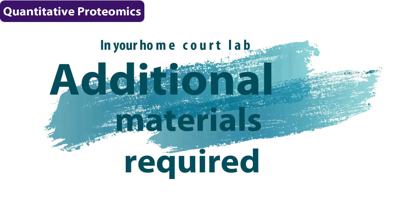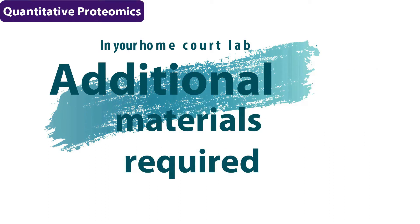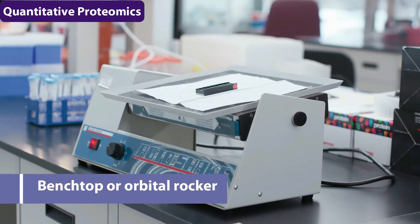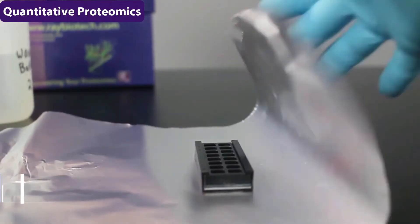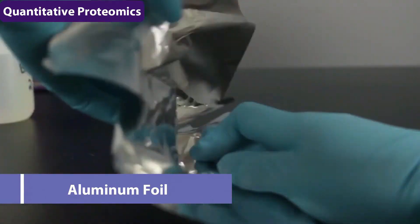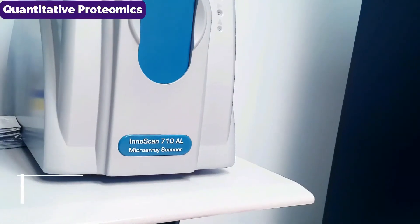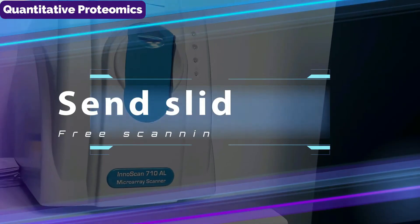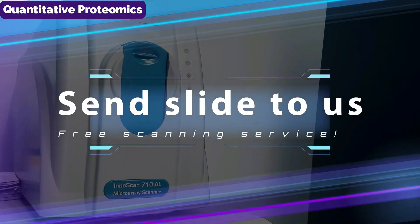In your home court lab, there are a few additional materials that you will need. These include a bench top orbital shaker or rocker, aluminum foil that we're going to use to protect our fluorescent dye, and a microarray scanner. If you don't have a scanner, that's okay. You can send us your slide, and we will scan it for you for free.